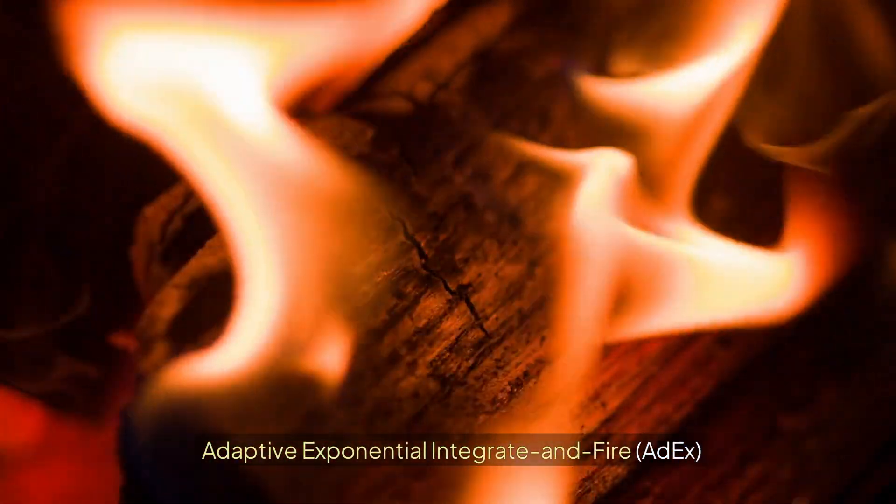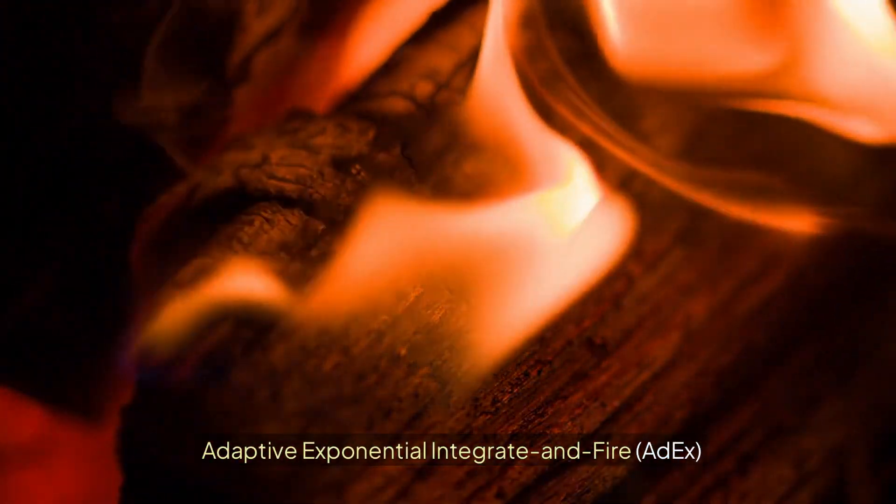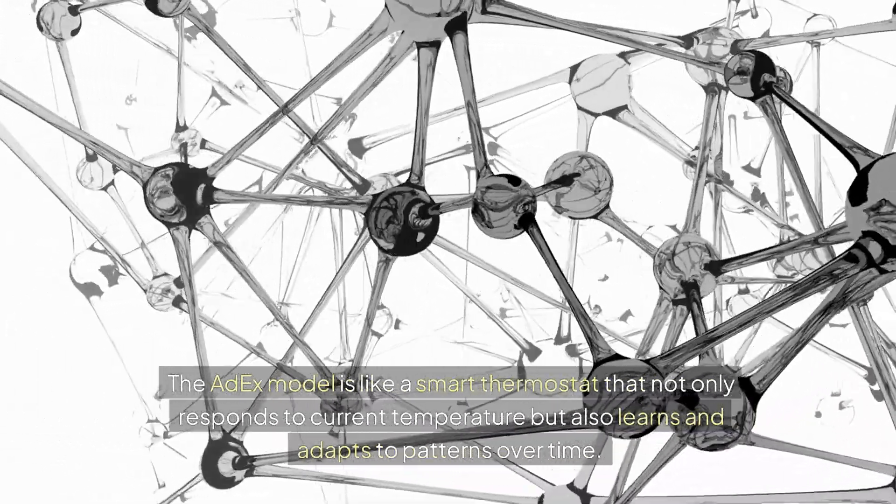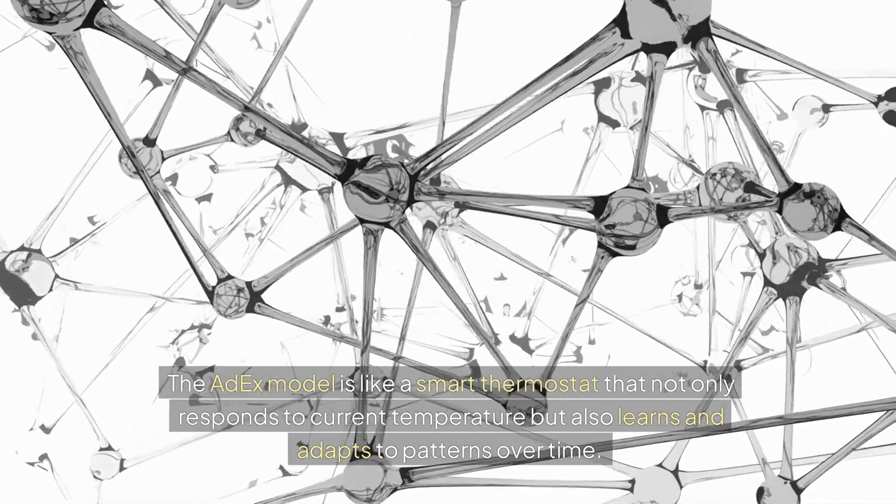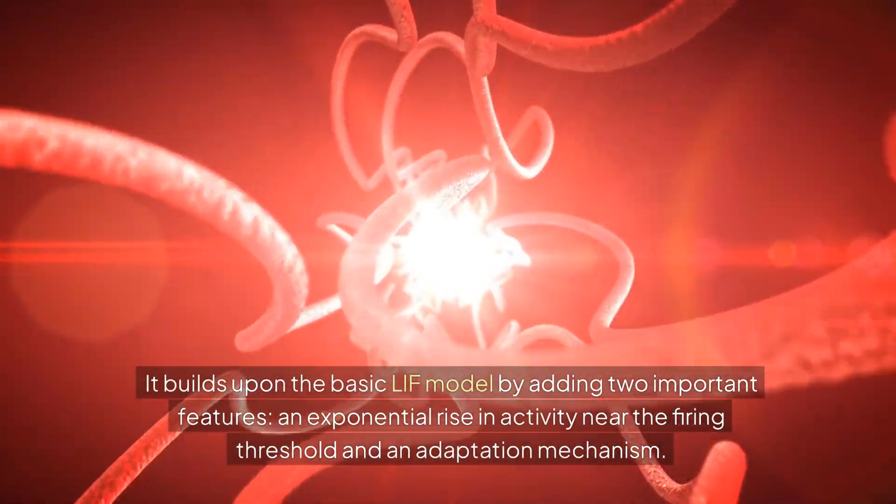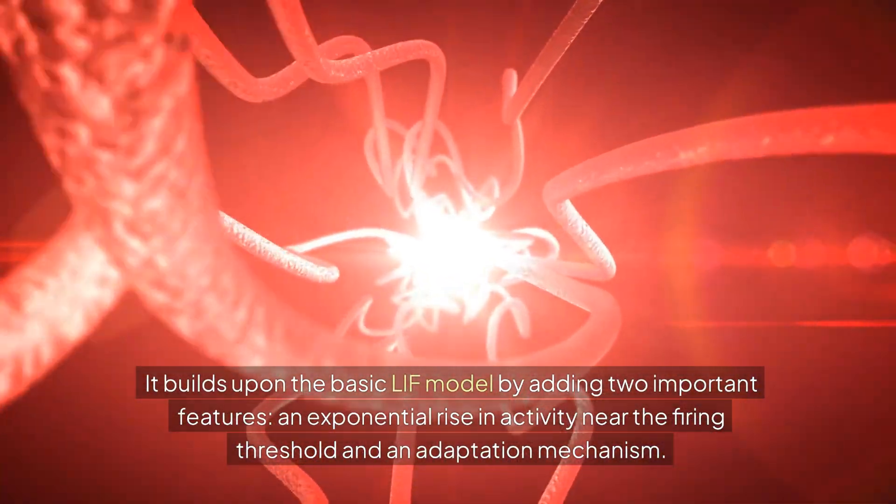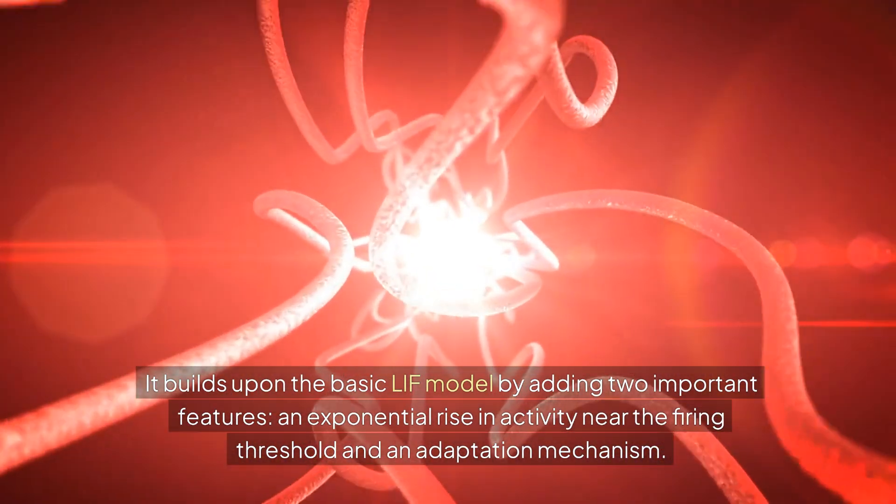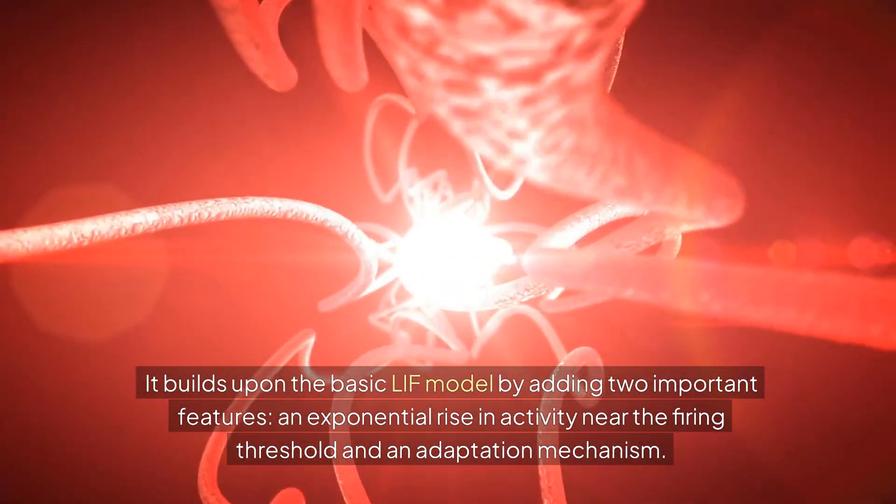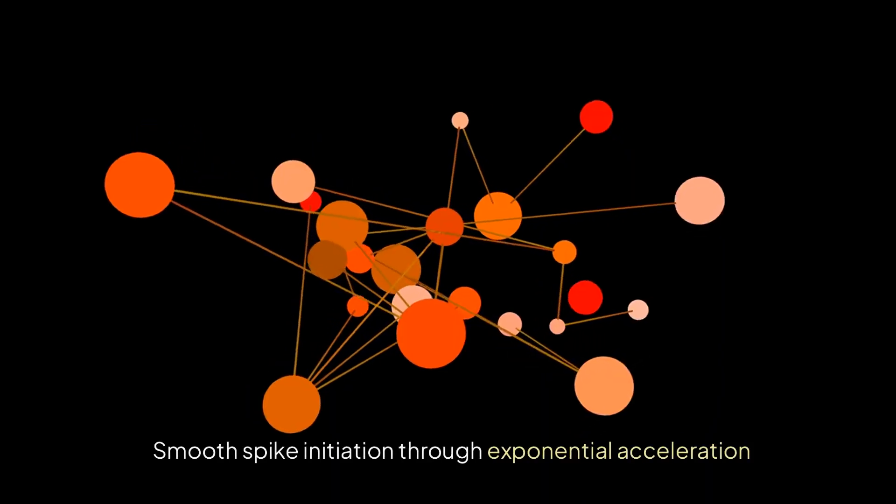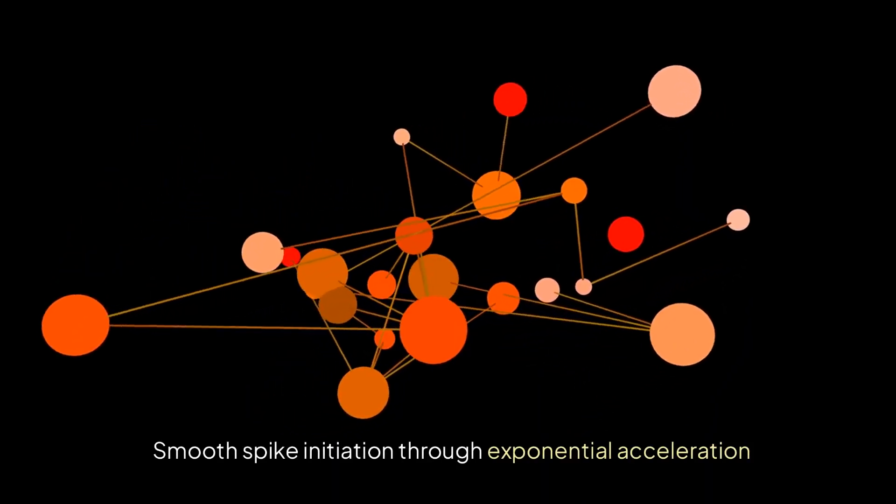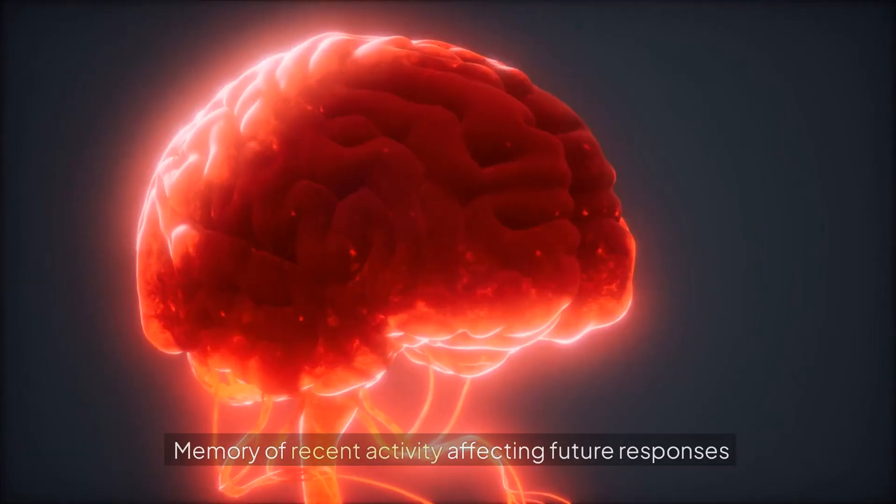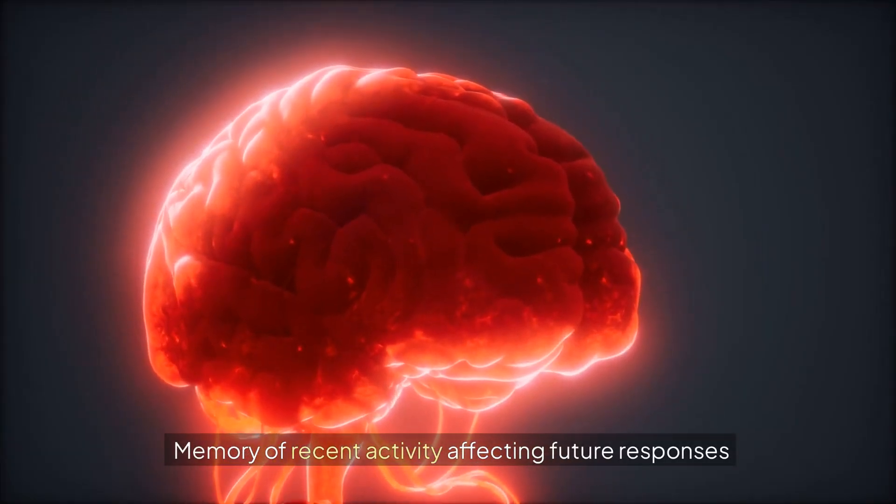Adaptive exponential integrate and fire (ADEX). The ADEX model is like a smart thermostat that not only responds to current temperature but also learns and adapts to patterns over time. It builds upon the basic LIF model by adding two important features: an exponential rise in activity near the firing threshold and an adaptation mechanism. Key features: smooth spike initiation through exponential acceleration, adaptation that allows the neuron to change its responsiveness, and memory of recent activity affecting future responses.